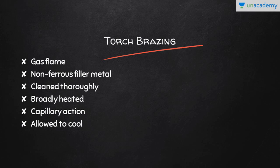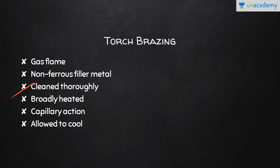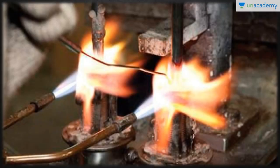Torch brazing is the most commonly used brazing process, wherein two metals are joined by heat obtained from a gas flame using a non-ferrous filler metal with a melting temperature above 450 degrees centigrade but below the melting temperature of the base metal. In operation, the surfaces to be joined are cleaned thoroughly to remove dirt, grease, and other oxides. After cleaning, flux is applied at the joint — borax, boric acid, fluorides, and chlorides are commonly used flux materials. The base metals are broadly heated by an oxy-acetylene welding torch. The filler metal is placed at the joint and heated with a carburizing flame, melts, and flows to the joint by capillary action. The workpiece is then allowed to cool, and the joint is cleaned to remove flux residues to prevent corrosion. You can see the torch brazing method here with the filler metal shown.